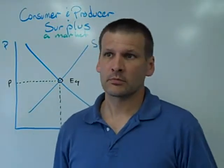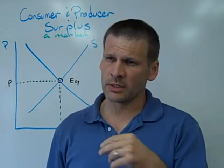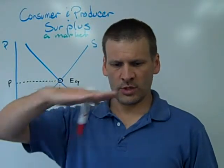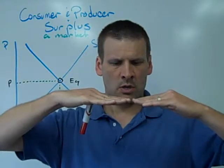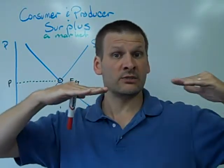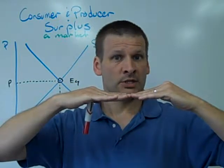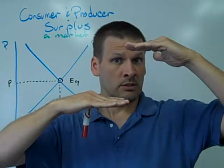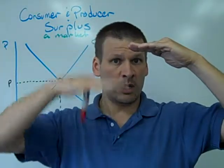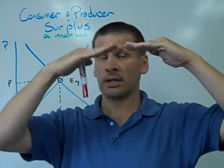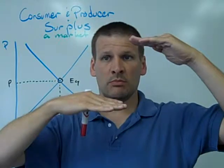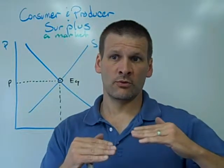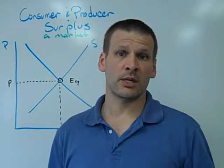Producer surplus is a very closely related concept, but it's about costs. A producer comes into the market with a certain amount of costs and offers a price reflective of those costs. Instead, the producer gets a higher price than anticipated, and so experiences an added sense of profit — an added sense of revenue as a result of fetching a higher price than expected at the market.